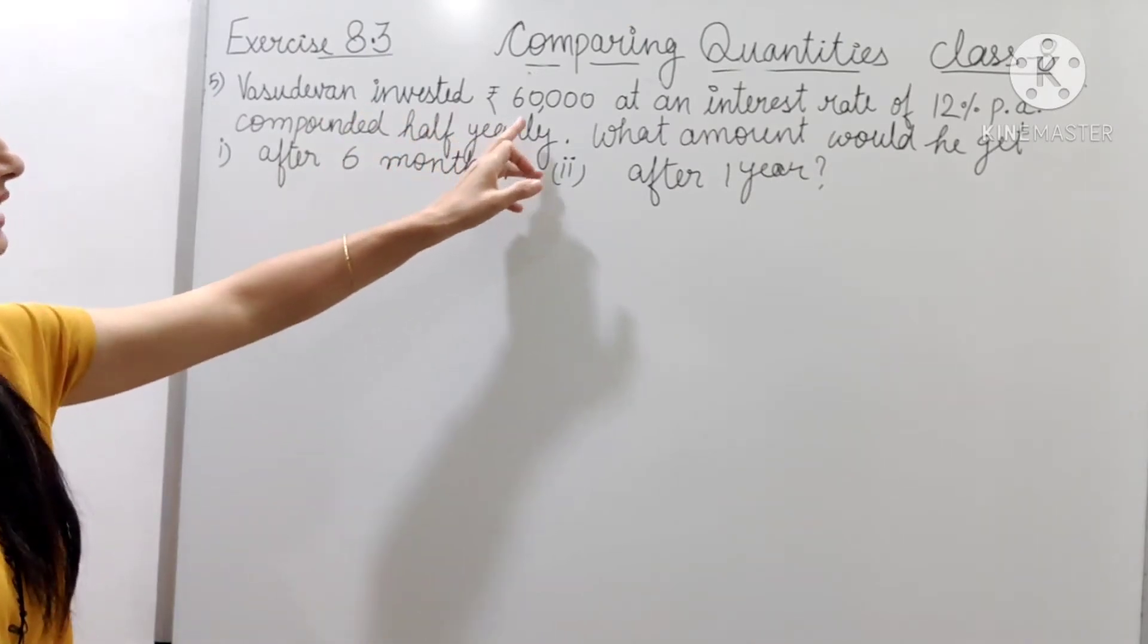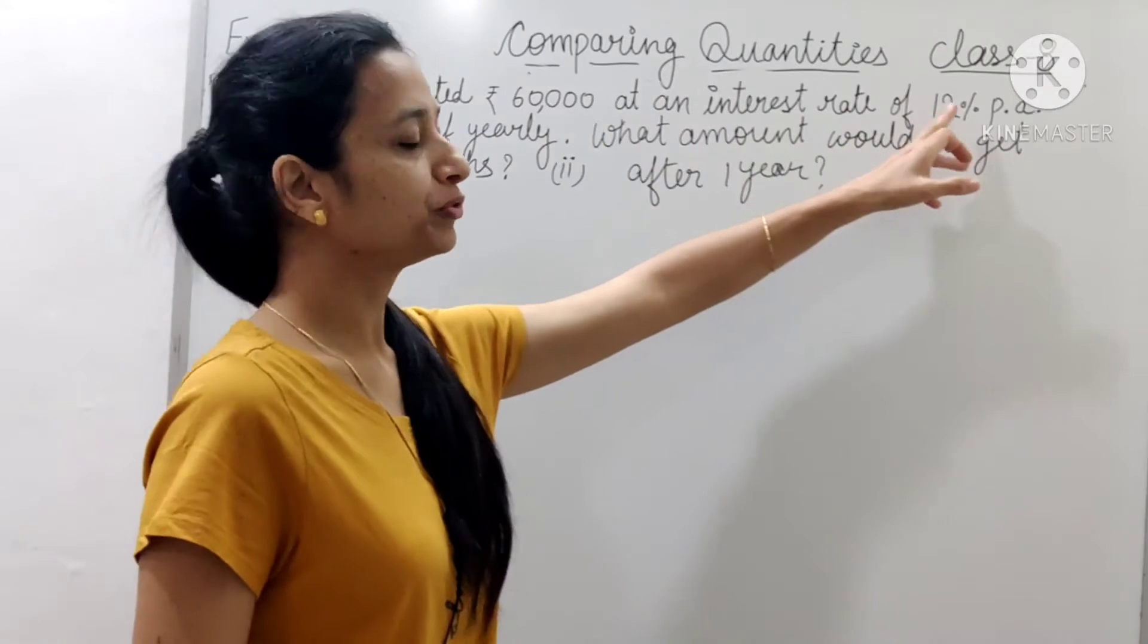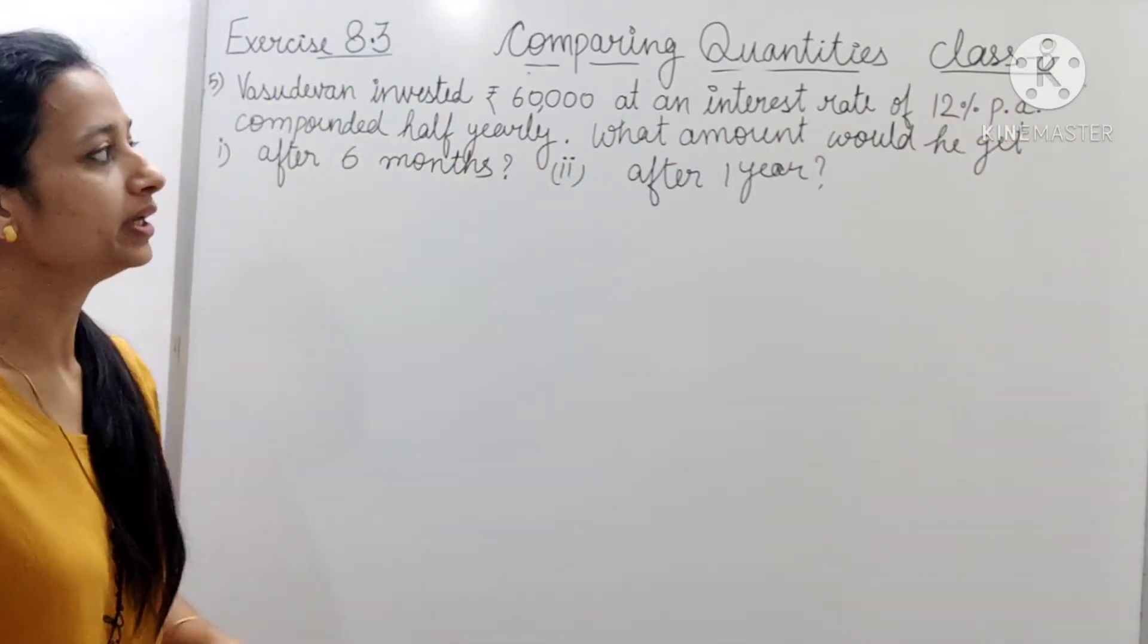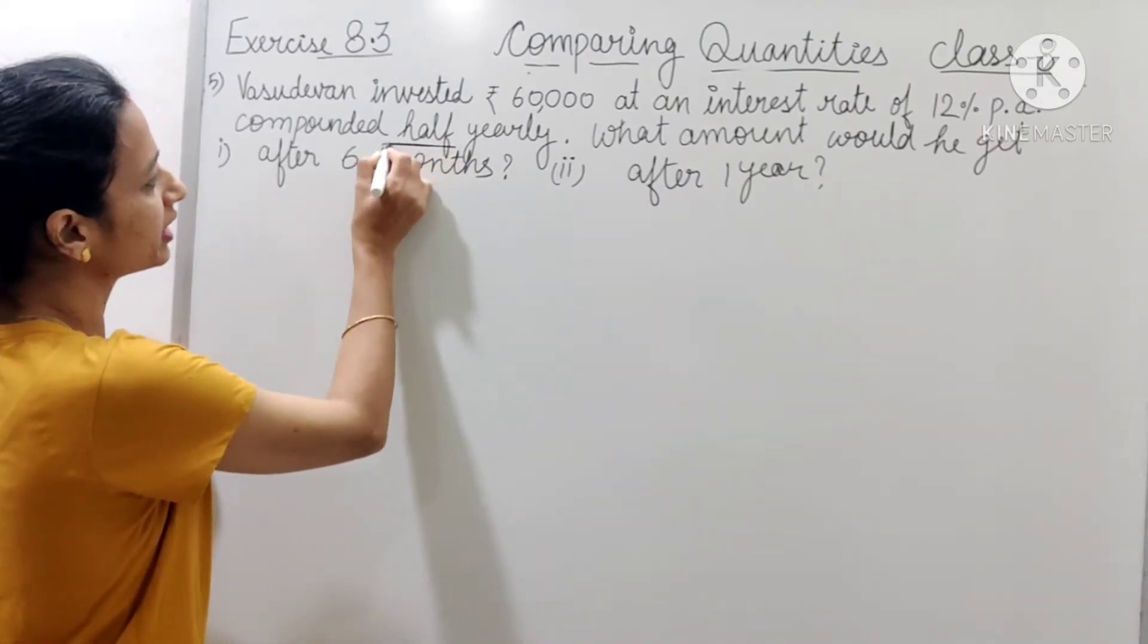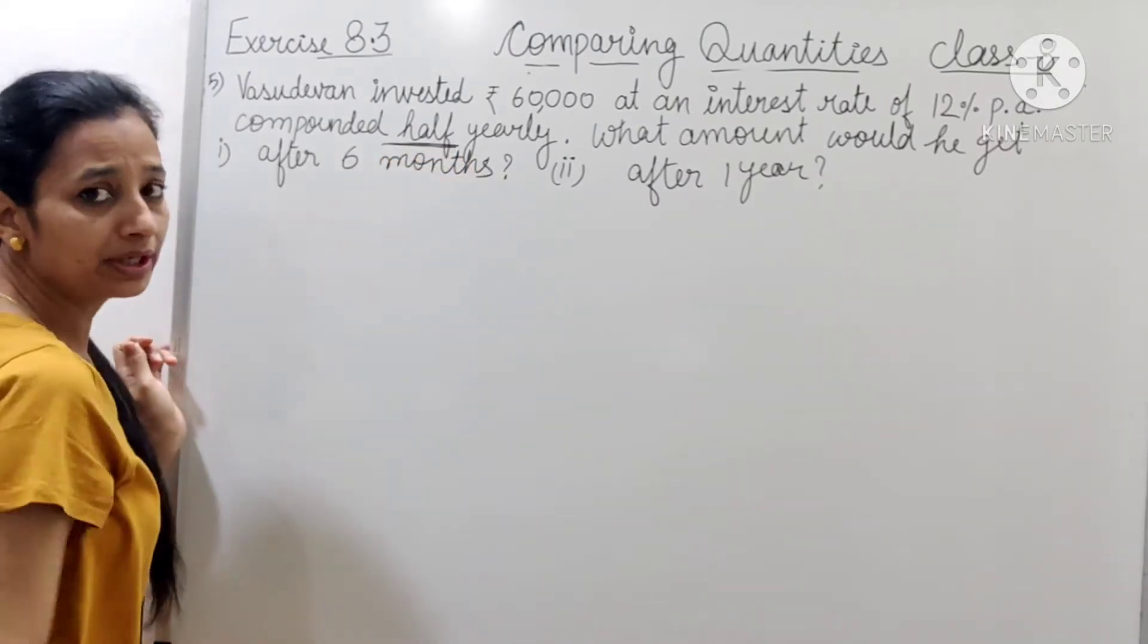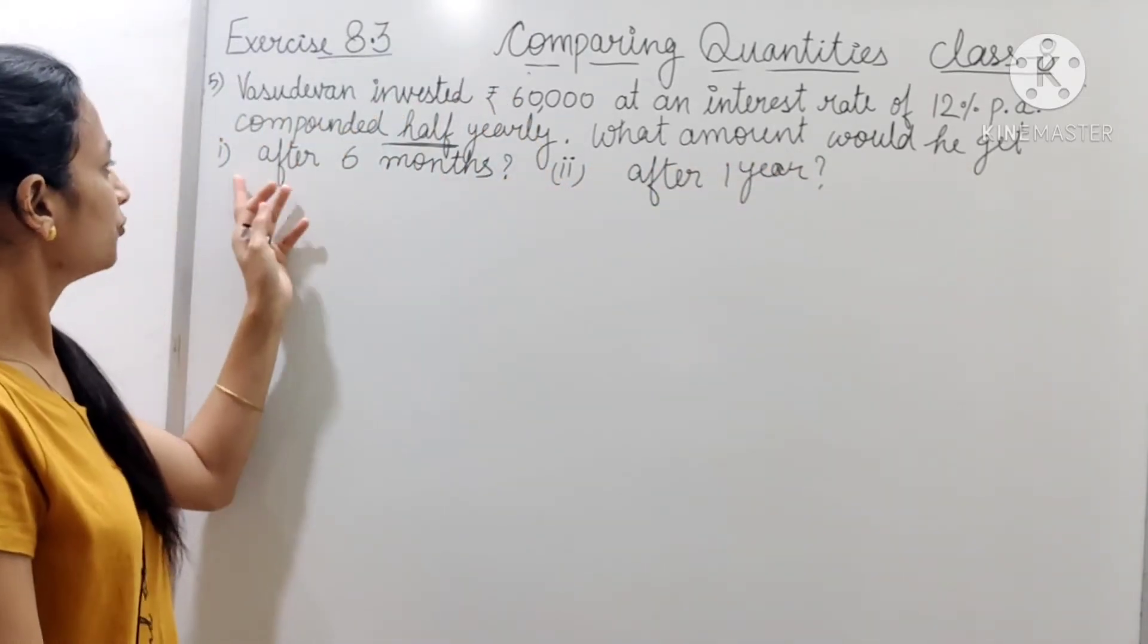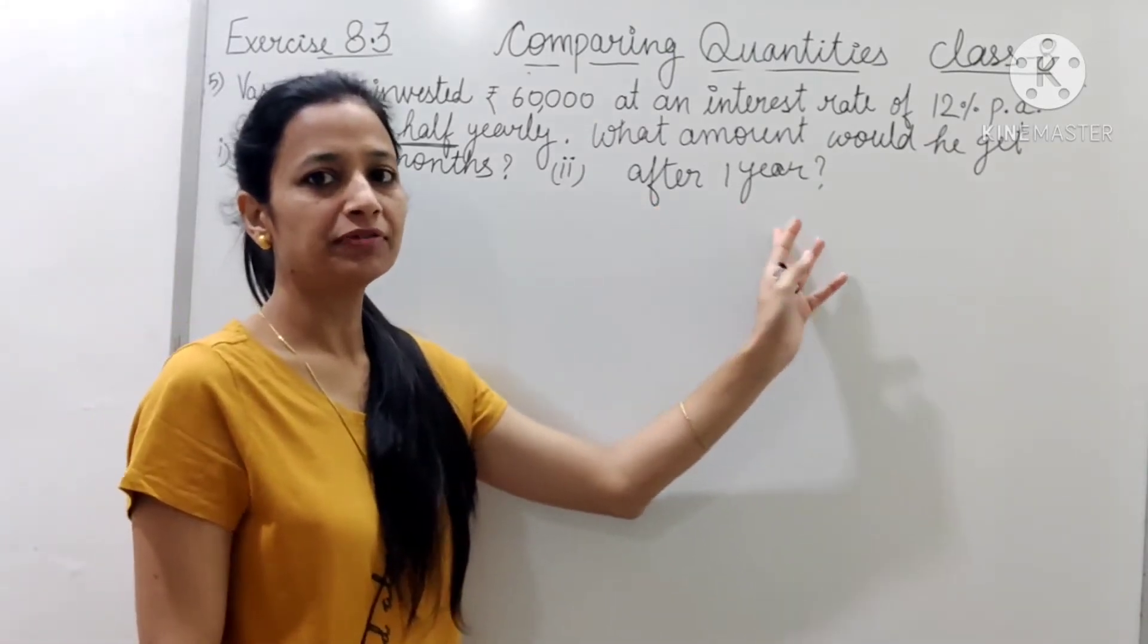Vasudevan invested rupees 60,000 at an interest rate of 12% per annum, compounded half yearly. Dekhiye, kaise liya hai? Compounded half yearly hai. What amount would he get first after 6 months and second after 1 year?